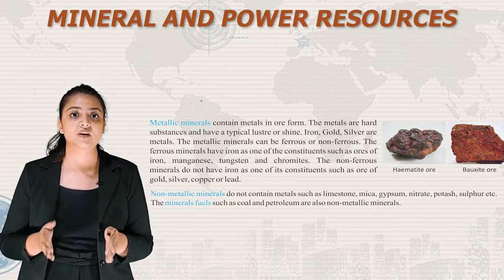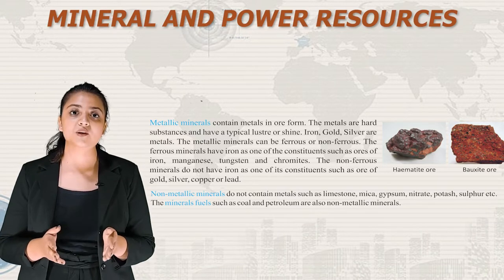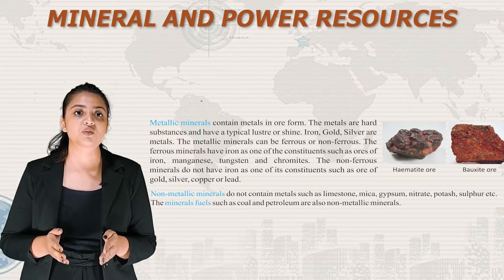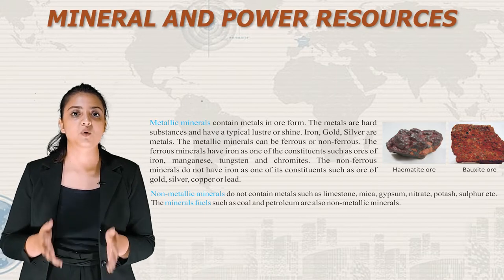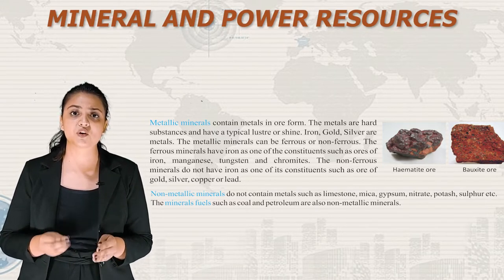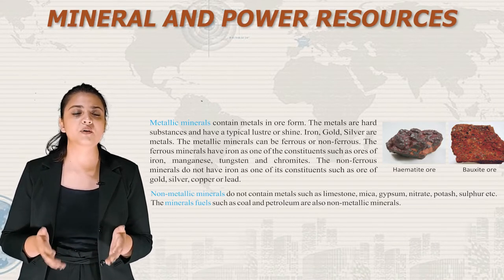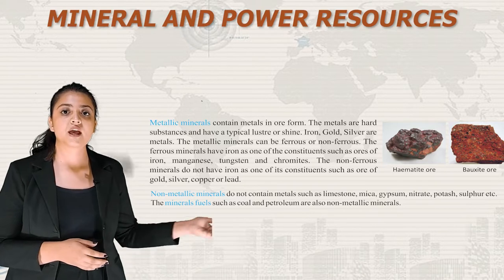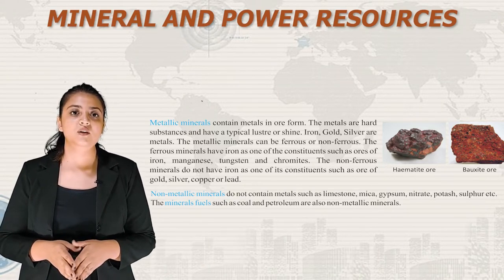Metallic minerals can be ferrous or non-ferrous. Ferrous minerals have iron ore as one of the constituents, such as ores of iron, manganese, tungsten and chromites. Non-ferrous minerals do not have iron as a constituent, such as ores of gold, silver, copper or lead. Here is an image of hematite ore and bauxite ore.